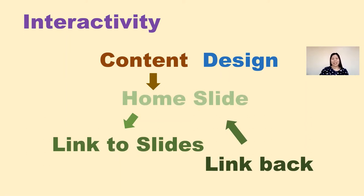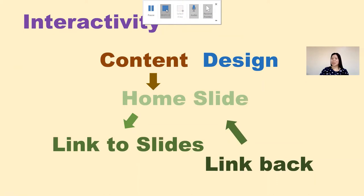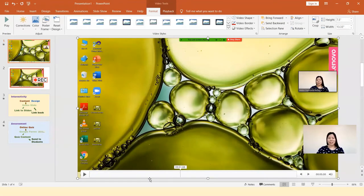Let's now end this screen recording. To stop recording, position your pointer at the top part of the window and the settings will appear. You can pause the recording and click again to continue, or click the Stop Recording button to stop. The recorded screen will then be displayed in your slide.